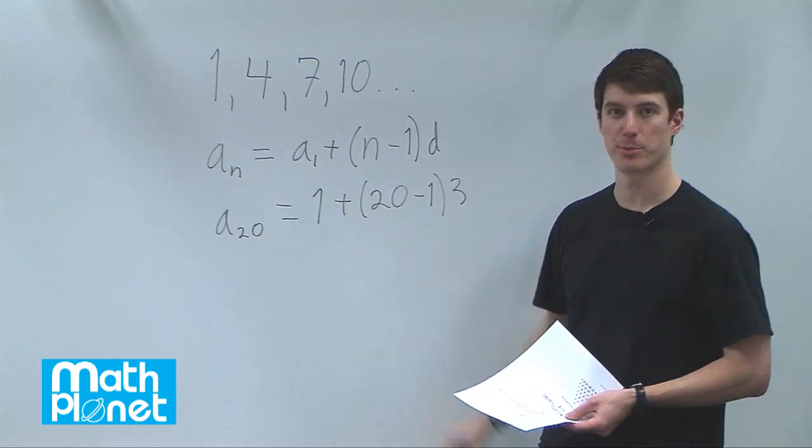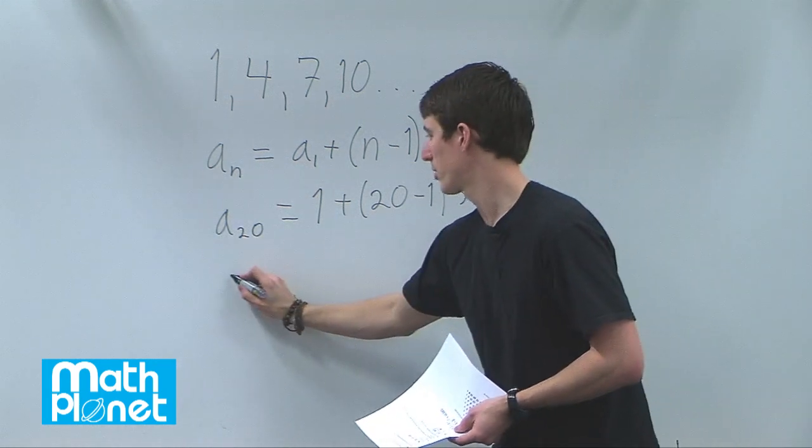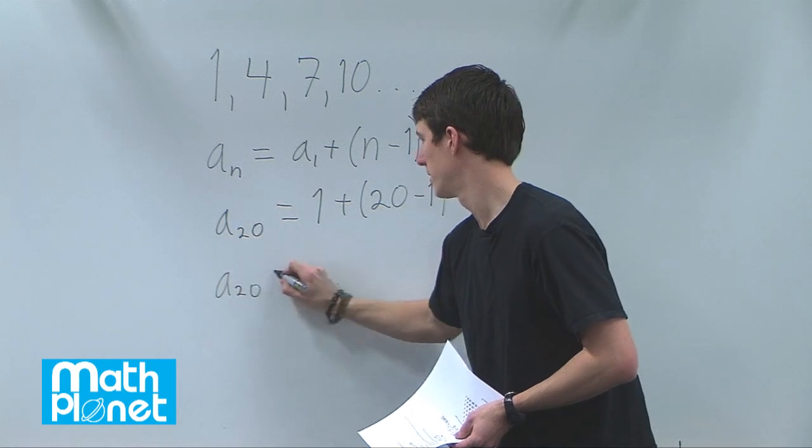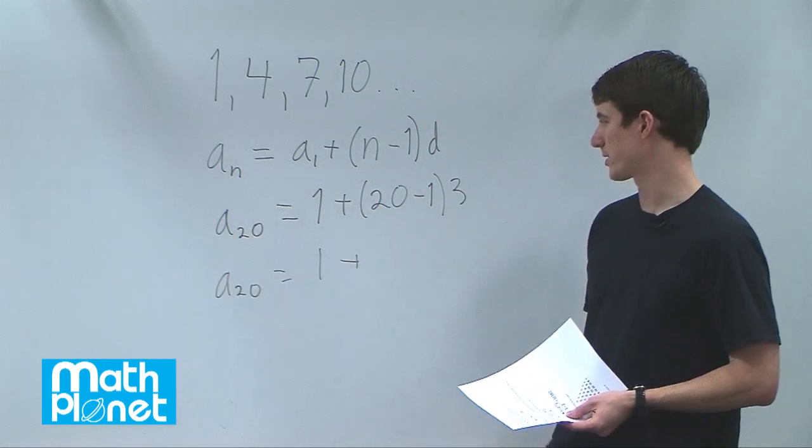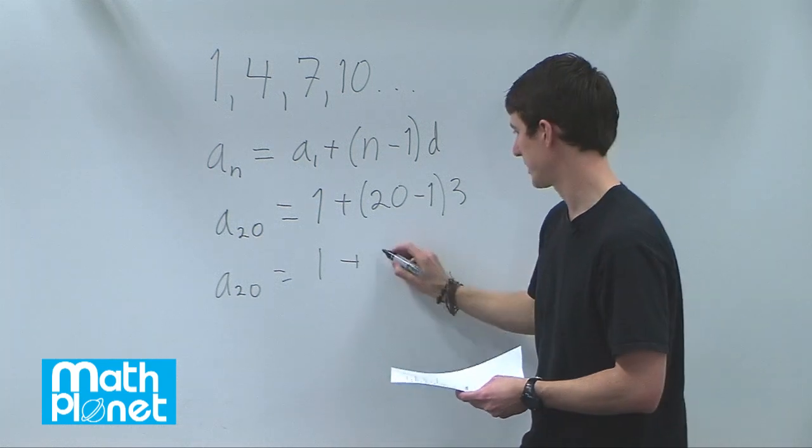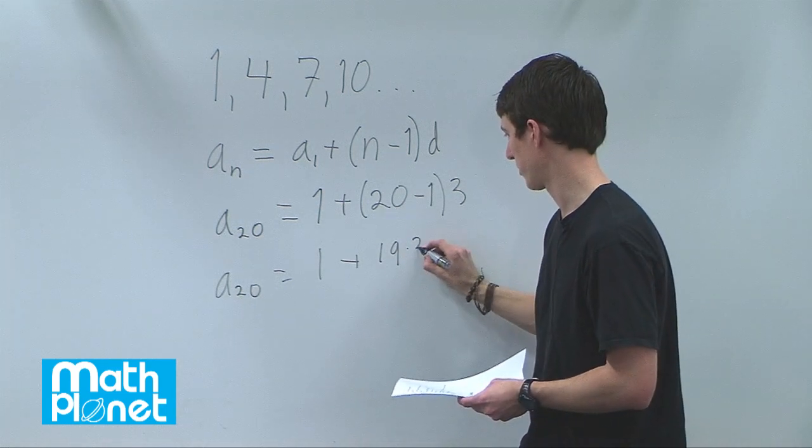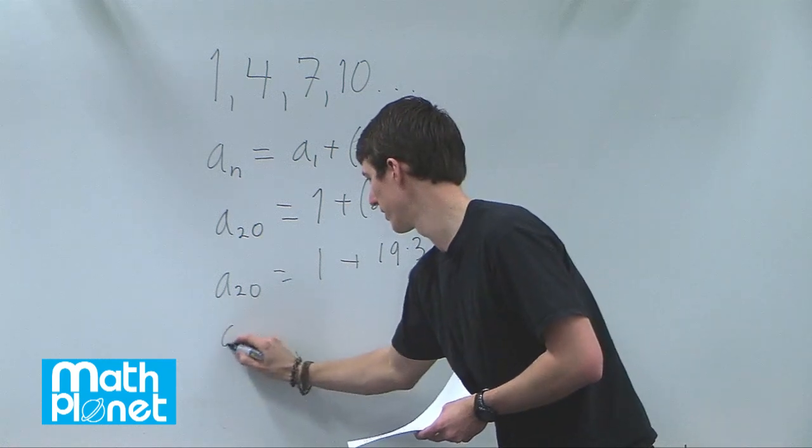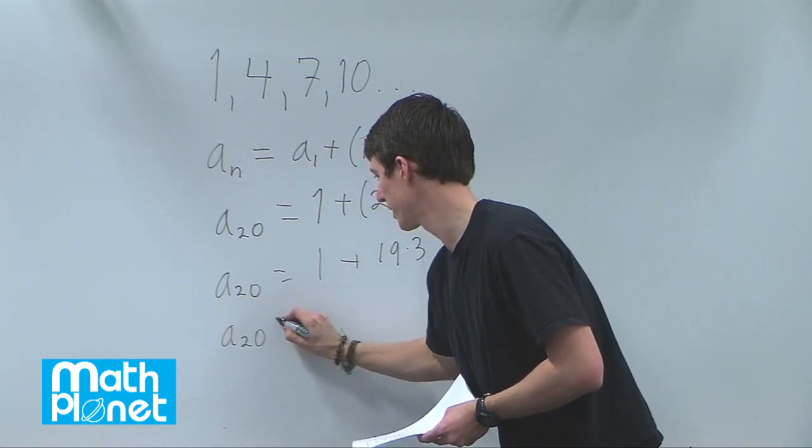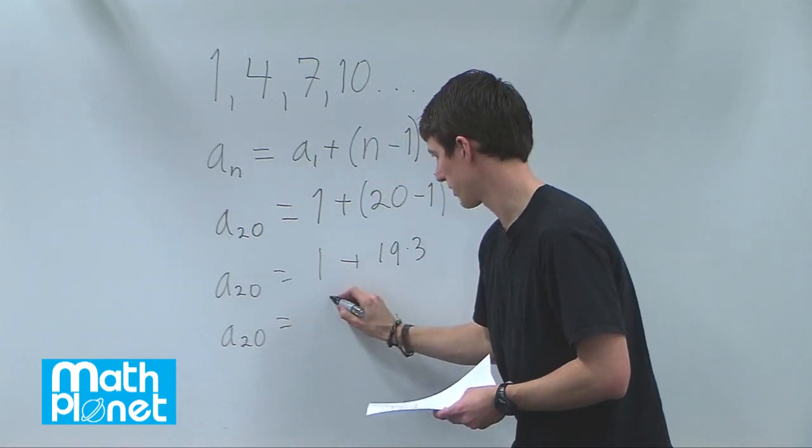and we can multiply this out and see what we get. So this gives us 1 plus, 20 minus 1 is 19, and then we have 19 times 3. This gives us a value of a20 equal to just 58.